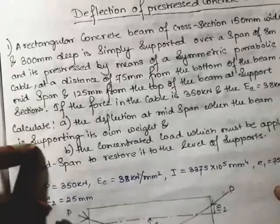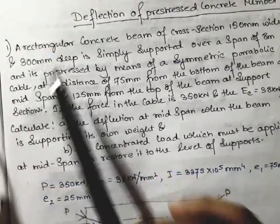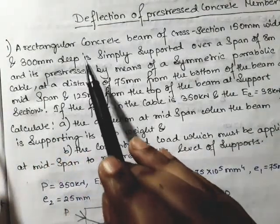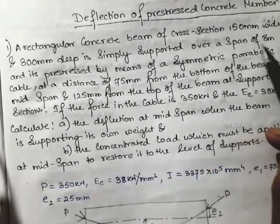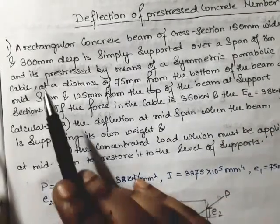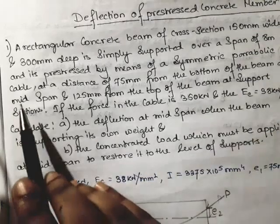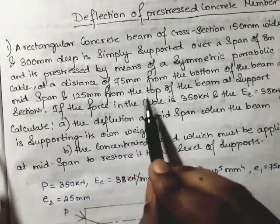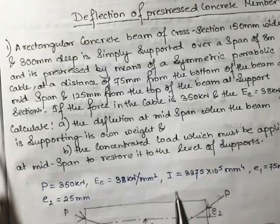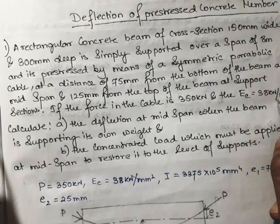Let me come to the problem definition first. A rectangular concrete beam of cross section 150 mm wide and 300 mm deep is simply supported over a span of 8 meters. It is pre-stressed by means of a symmetric parabolic cable at a distance of 75 mm from the bottom of the beam at mid span and 125 mm from the top of the beam at the support section. The force in the cable is 350 kN and the modulus of elasticity of concrete is 38 kN per mm square.